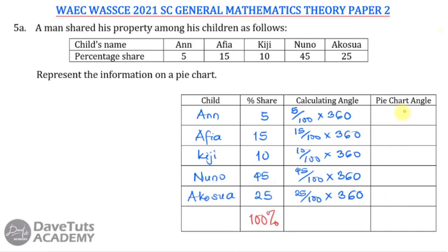If you're observant, 15 is 3 times 5, so the next value — 54 — is 3 times 18. For 10, that is 18 times 2, giving 36. For 45, that is 15 times 3, so it is 54 multiplied by 3, which is 162. And 25 is 5 multiplied by 5, so 18 multiplied by 5 is 90. That's another intuitive way to solve it — don't be stereotyped into one method; use whatever is convenient.